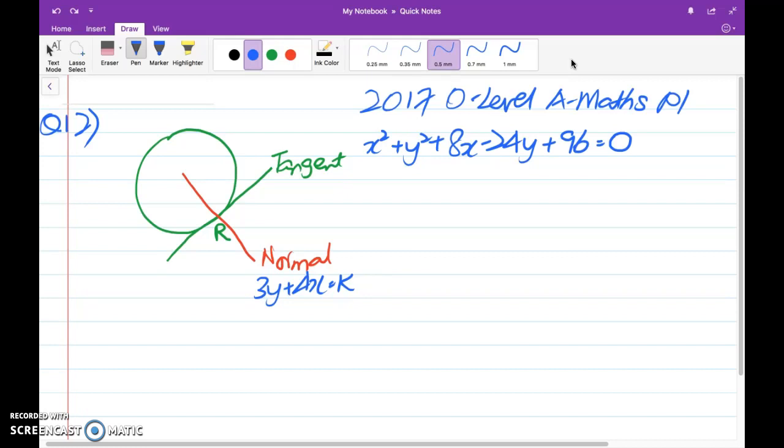The equation of the normal to the circle x square plus y square plus 8x minus 24y plus 96 equals to 0. At the point R is 3y plus 4x equals to k. Part 1. Find the value of the constant k. Now this is a 5 marks question. So looking at constant k,